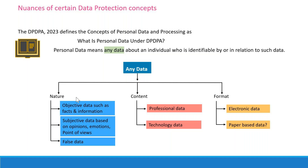In GDPR, there is a specific call-out that any personal data which is part of a structured methodology — for example, a structured filing system such as KYC for a bank, insurance, or income tax — where the document is formally accounted for, has an owner, is protected, will be digitized or formally acted upon, and will be kept as part of retention — those paper assets are included under GDPR.